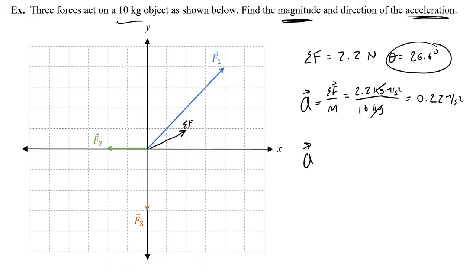What about the direction of the acceleration? Well, from Newton's second law, acceleration and force are in the same direction. When you punch someone in the face with a force, the acceleration is proportional and in the same direction as that force. So the angle for the acceleration is also 26.6 degrees — 0.22 meters per second squared at 26.6 degrees — and if I draw it, it points along the net force, just a bit smaller.